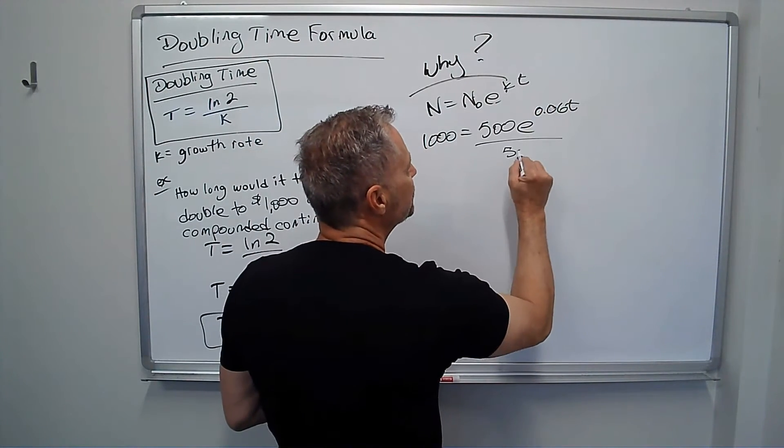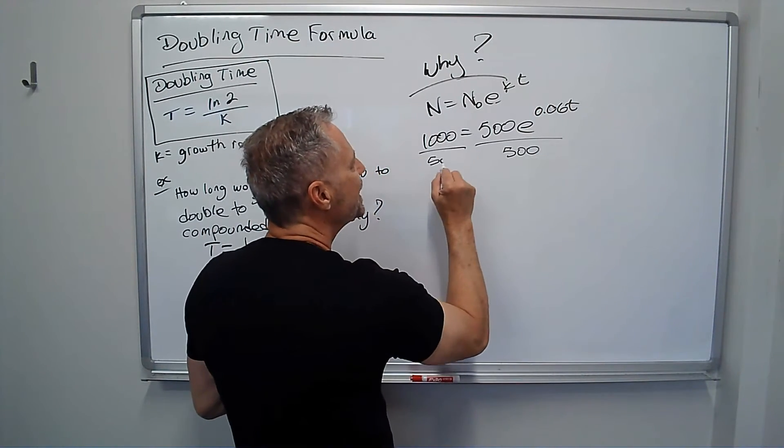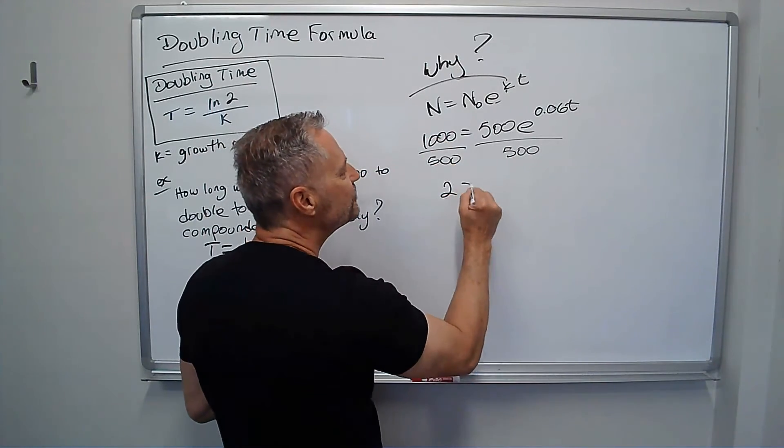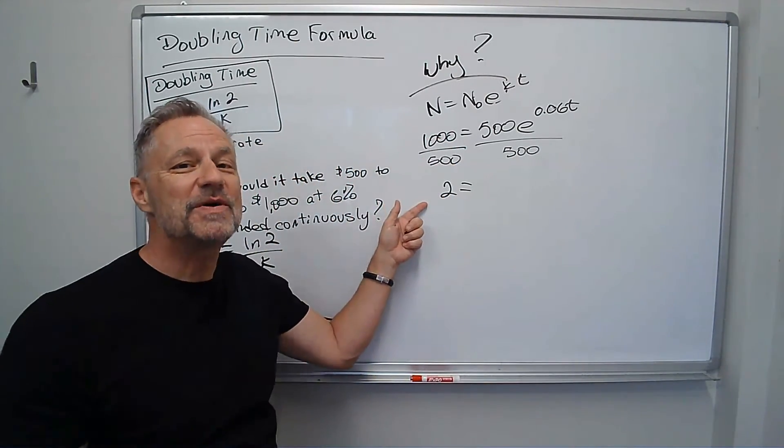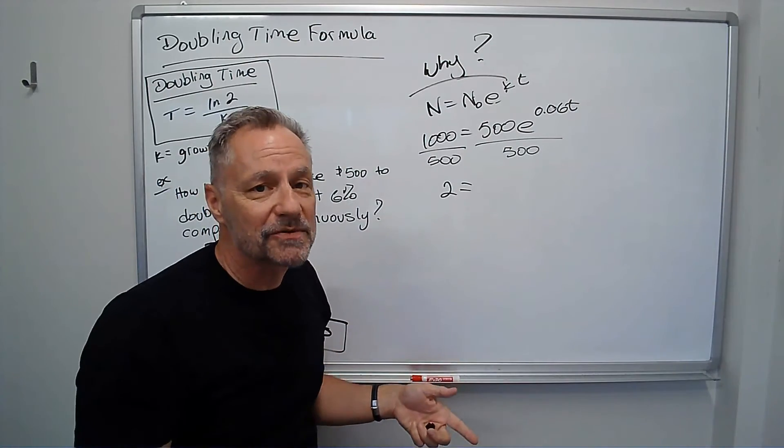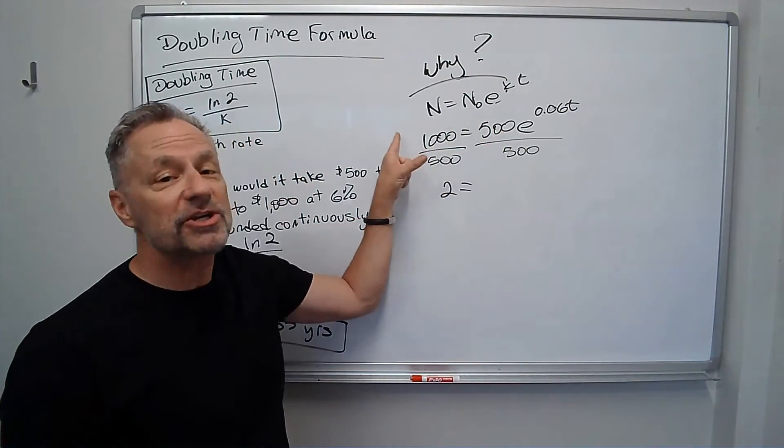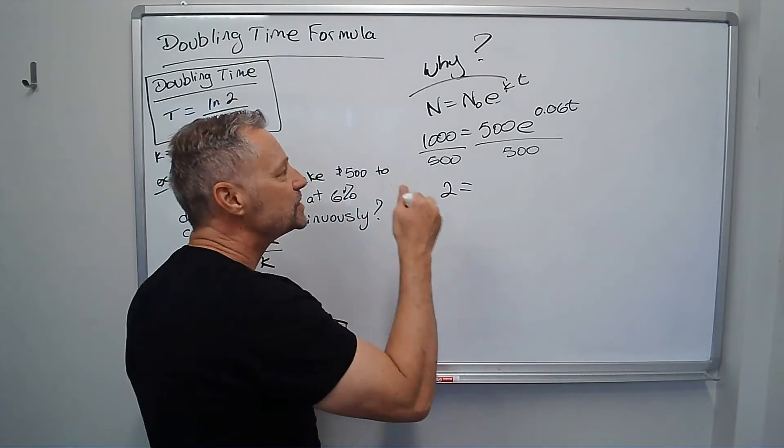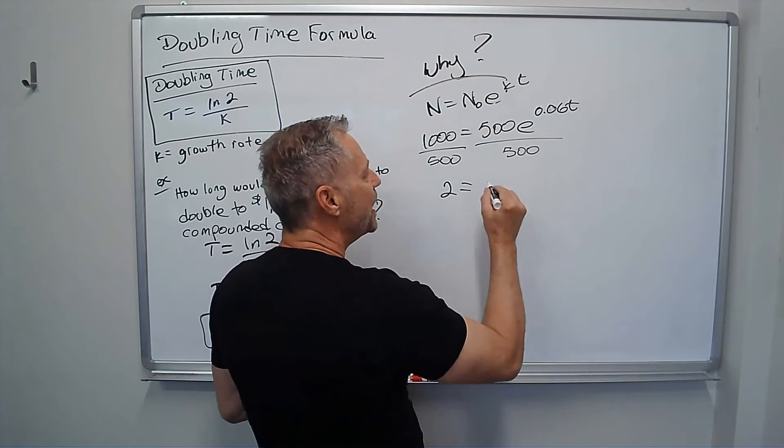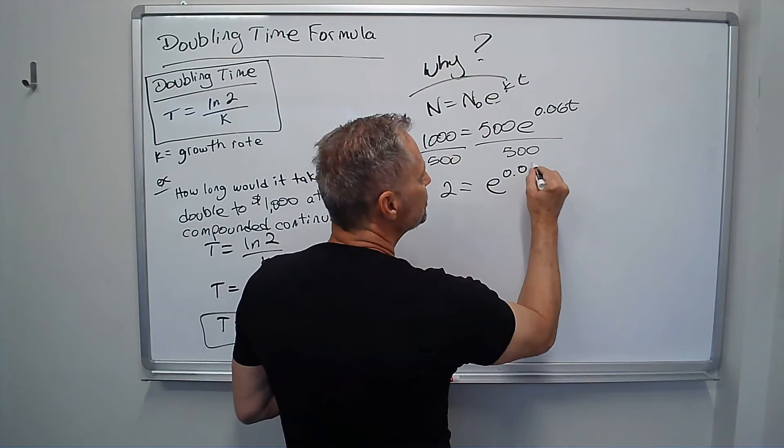I divide both sides by 500. And notice the 1,000 divided by 500 is 2. It's always going to be 2 if it doubles. If this was 5 million to 10 million, it doubled. If it was $1 to $2, it doubled. That's always going to be a 2. And I've got e to the 0.06t.